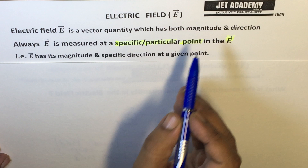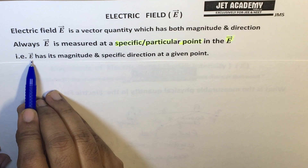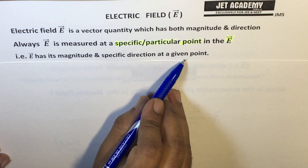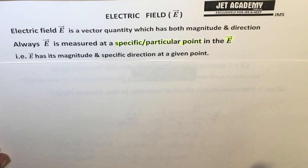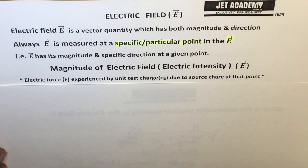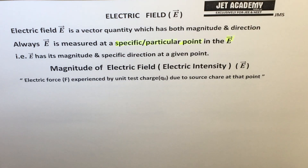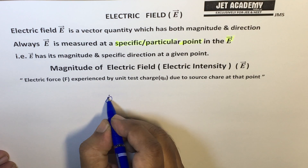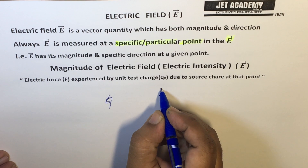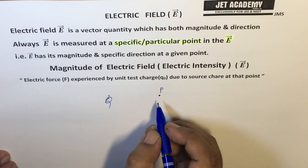Since E has both magnitude and direction, we have to find both at a single given point. The magnitude of electric field, or electric intensity, is the electric force F experienced by a unit test charge due to the source charge at that point. If we keep a charge Q at point P and want to find the electric intensity magnitude, then we use this definition.